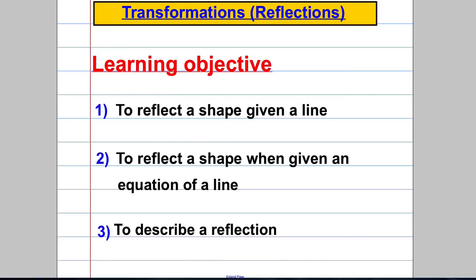So what do you need to know? Well you need to be able to do the following: reflect a shape given a line, reflect a shape when given an equation of a line — so here we'd actually be drawn the line, here we'd only be given the equation — and lastly we'd need to describe a reflection.